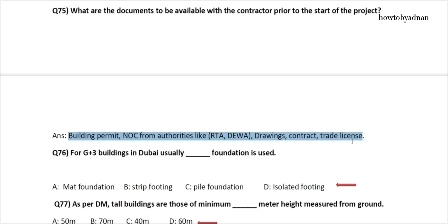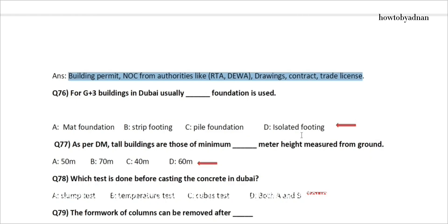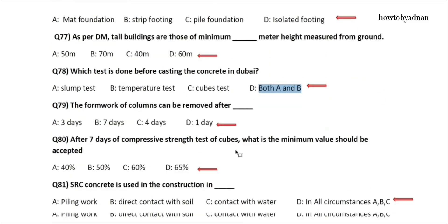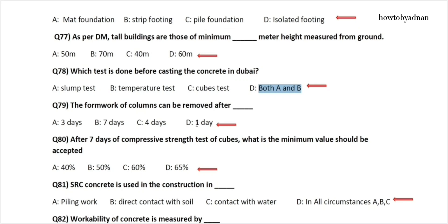Question 76: For G+3 buildings in Dubai, which foundation is usually used? The answer is option D: Isolated footing. Question 77: As per DM, tall buildings are those of minimum how many meters height measured from ground? The answer is option D: 60 meters. Question 78: Which test is done before casting concrete in Dubai? The answer is option D: Both A and B.